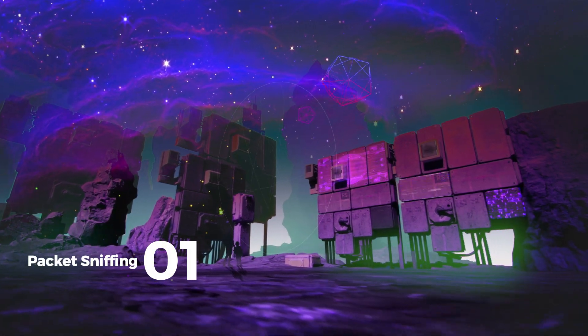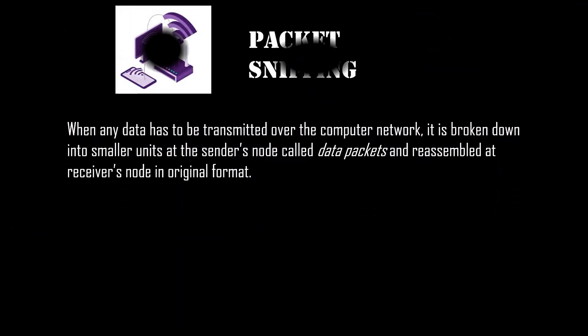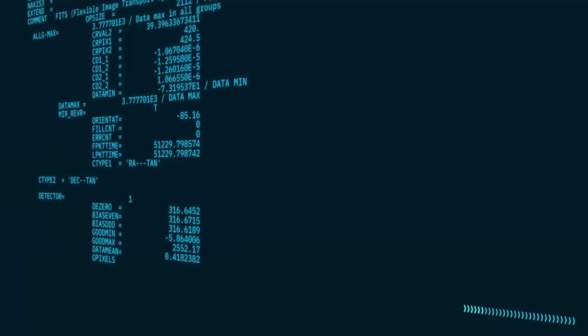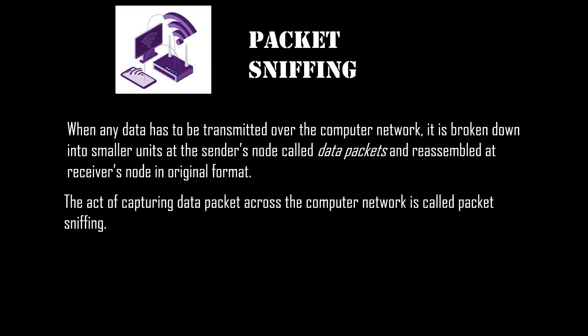The first is packet sniffing. When any data has to be transmitted over a computer network, it is broken down into smaller units at the sender's node called data packets and reassembled at the receiver's node in original format. It is the smallest unit of communication over a computer network, also called a block, a segment, a datagram, or a cell.